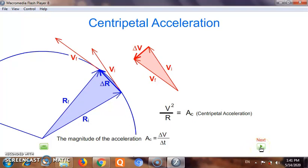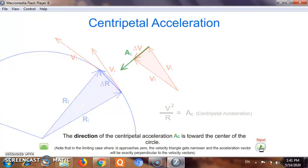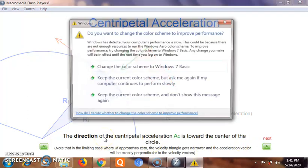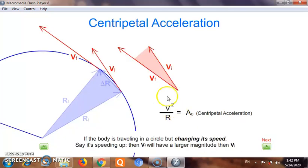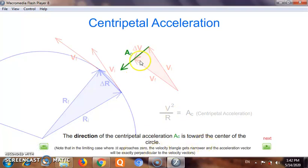The direction of this centripetal acceleration: here I find that the direction was towards the center of the circle in the direction of delta v itself. So you understand that centripetal acceleration acts towards the center.